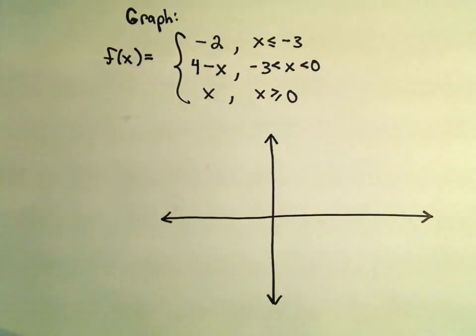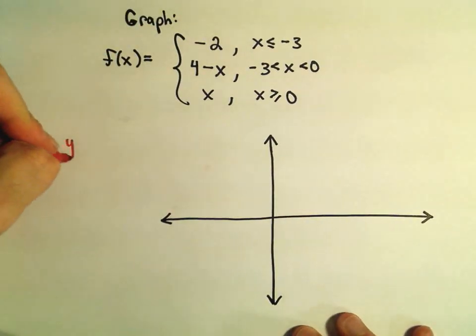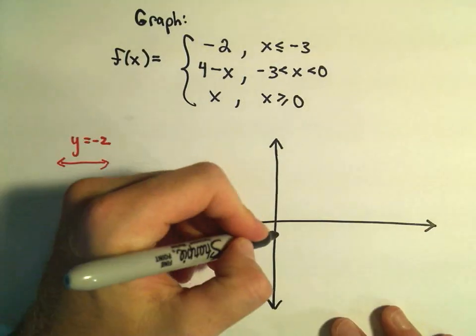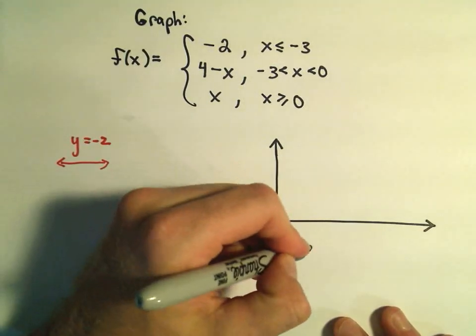So here is my little graph. I'm just going to do them kind of in order here. If you think about the first equation, y equals negative 2, that's just a horizontal line at the y value of negative 2. So let me drop down here negative 1, negative 2 units.